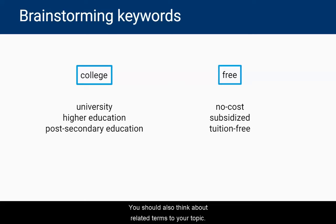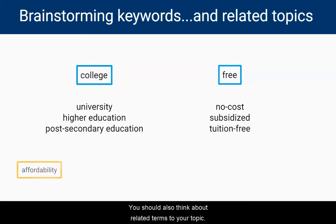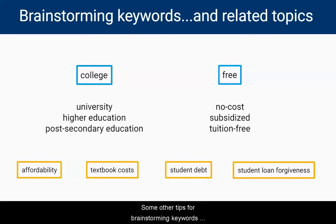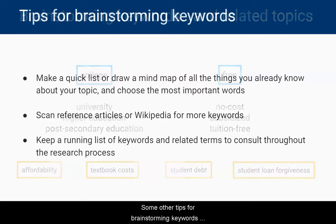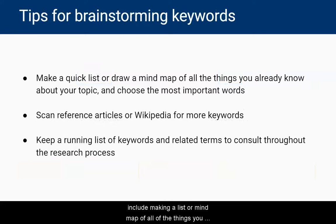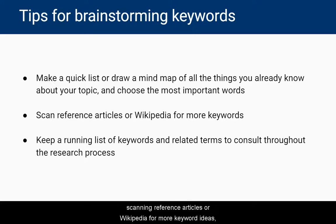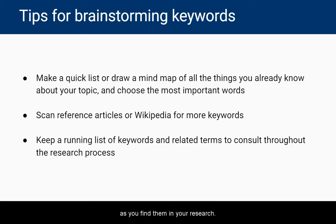You should also think about related terms to your topic. Some other tips for brainstorming keywords include making a list or mind map of all the things you already know about your topic, scanning reference articles or Wikipedia for more keyword ideas, and keeping a running list of keywords and related terms as you find them in your research.